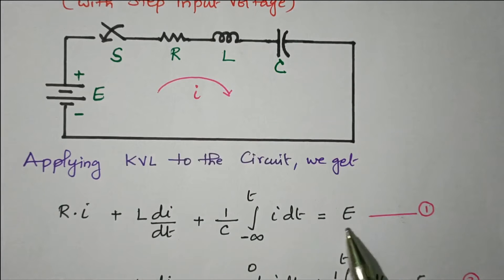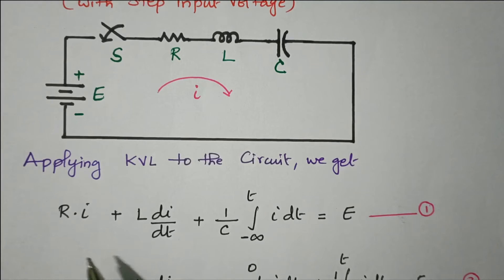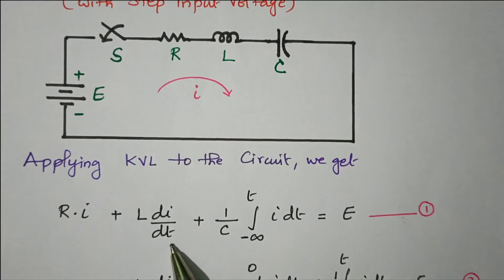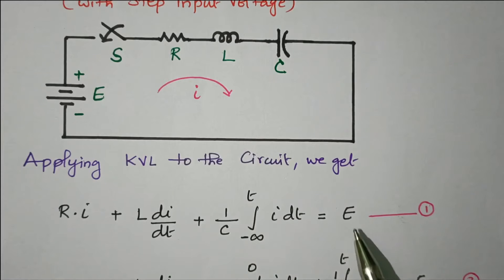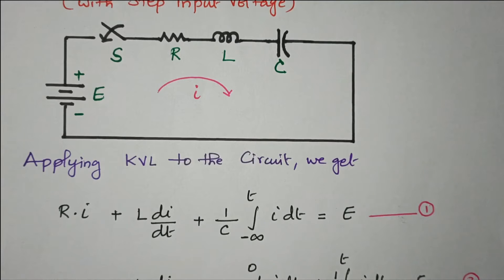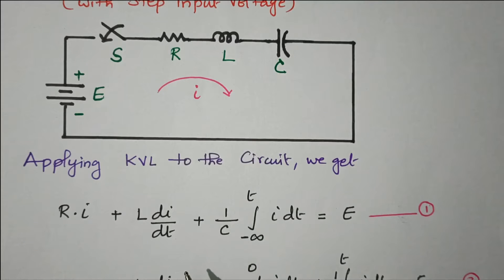The applied voltage E is equal to the resistive drop plus inductive drop plus capacitive drop. Resistive drop is R·i, inductive drop is L·di/dt, and capacitive drop is (1/C)·∫(from −∞ to T) i dt, all equal to supply voltage E. This is the potential rise equated to potential drop — the basic KVL equation for the RLC circuit. Let us call this equation number 1.